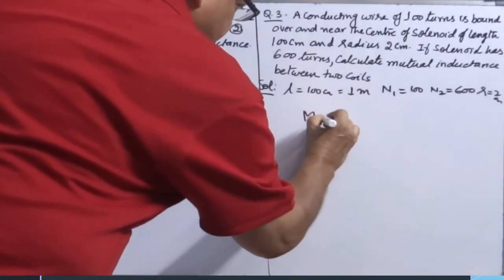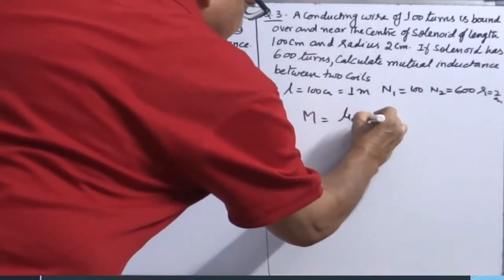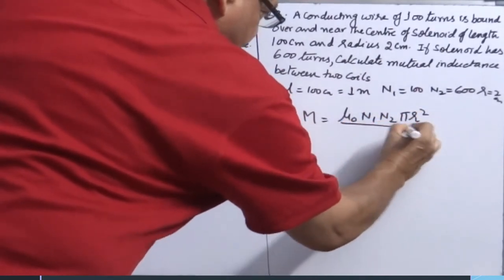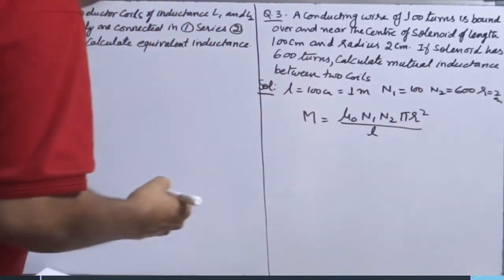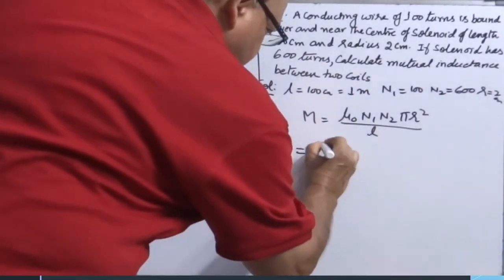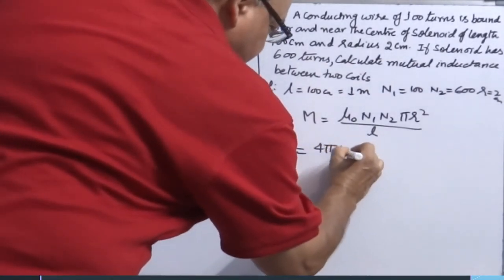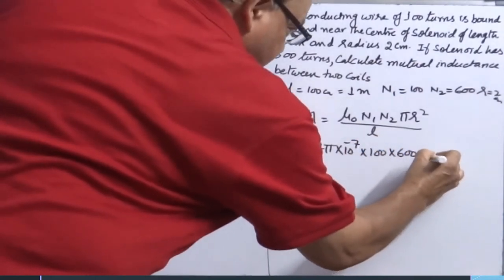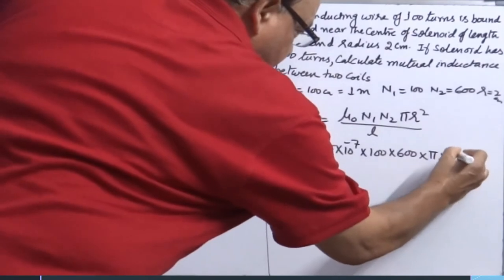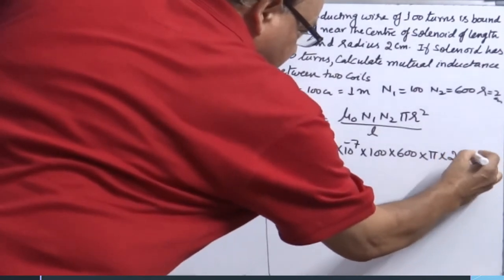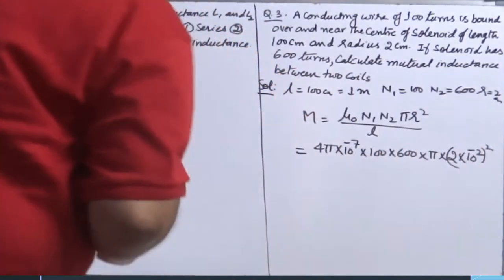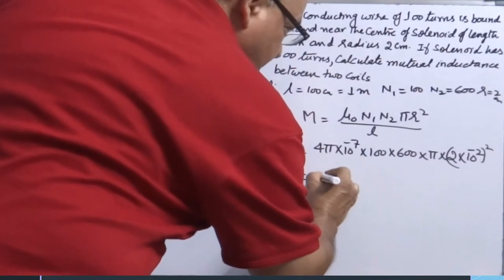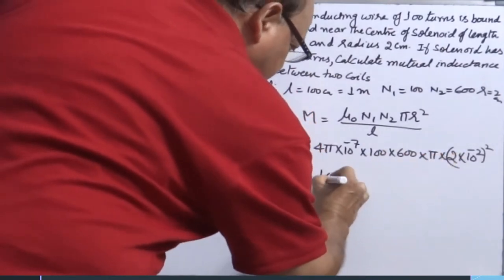Solution. Mutual inductance we have to find. M equals mu naught N1 N2 pi R square over L. L is 1, so straight way substitution. 4 pi times 10 to the power minus 7, 100 into 600 into pi into 2 times 10 to the power minus 2 whole square.